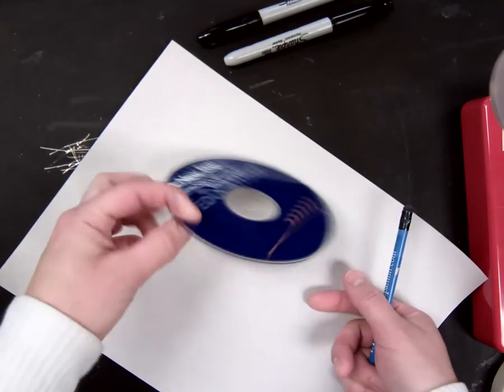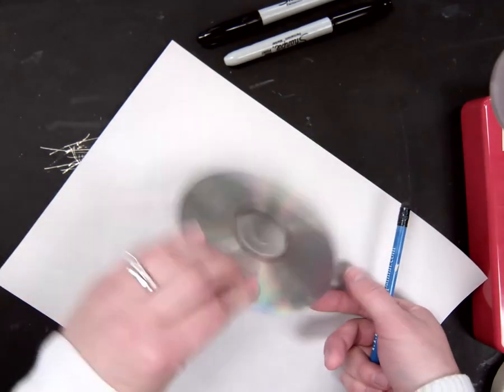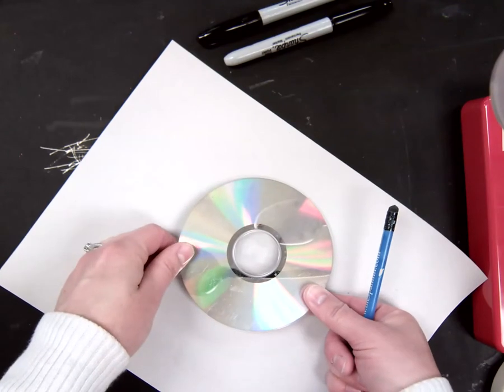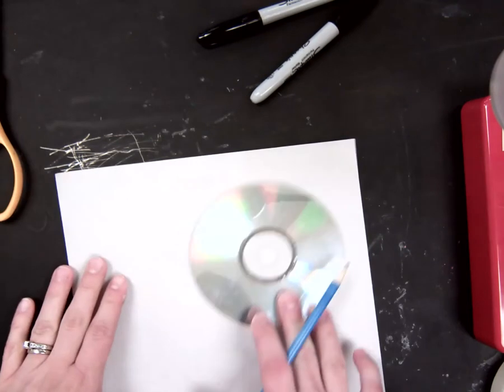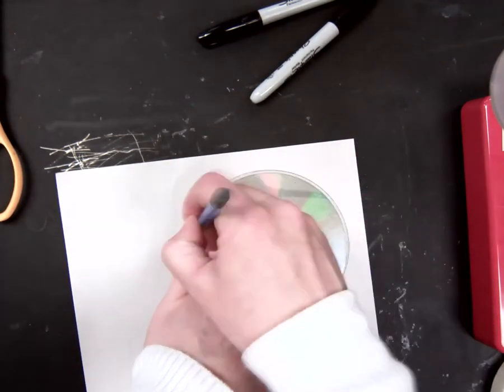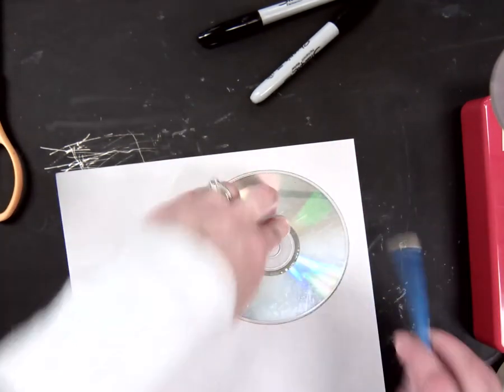It does not matter what your CD looks like. It doesn't matter what's on the back. It does not even matter if there's scratches on the CD because you're going to cover most of this up. So what you're going to want to do on a piece of newsprint is trace it in pencil and cut it out.